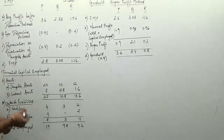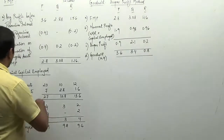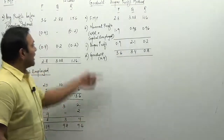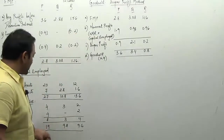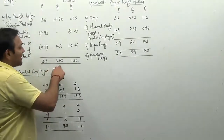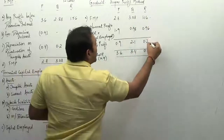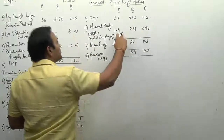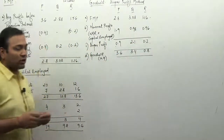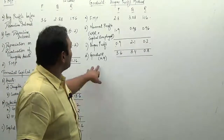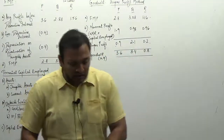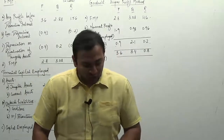Continuing from the previous problem, terminal capital employed is 19, 9.8, and 9.6. With NRR at 10%, normal profits are 1.9, 0.98, and 0.96. FMPs are already calculated as 2.8, 3.08, and 1.16. Comparing both, super profits are: 2.8 minus 1.9 = 0.9, 3.08 minus 0.98 = 2.1, and 1.16 minus 0.96 = 0.2. Goodwill is four years purchase of super profits: 3.6, 8.4, and 0.8.